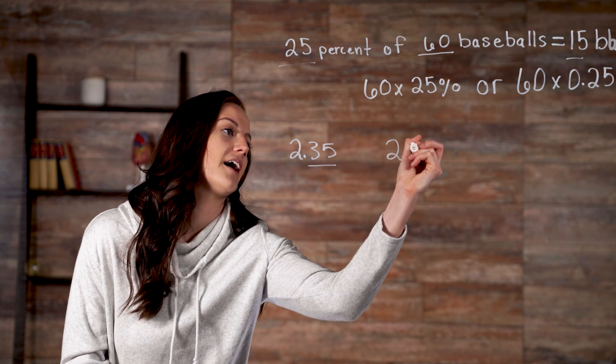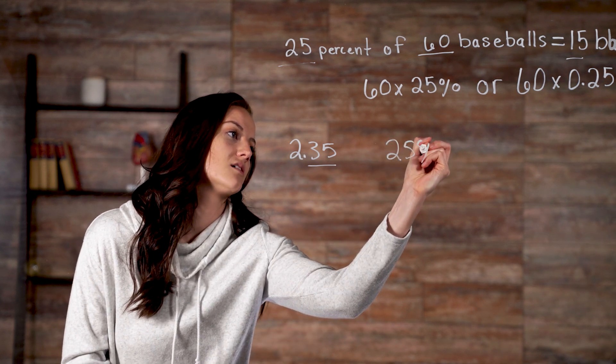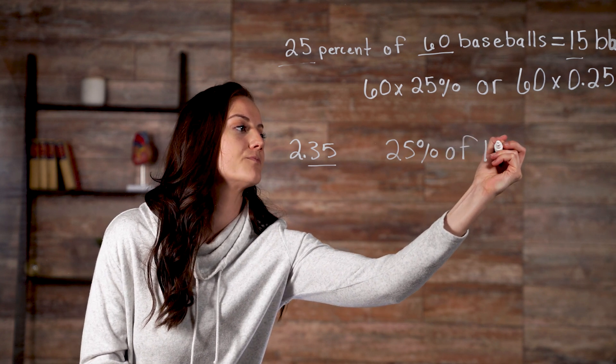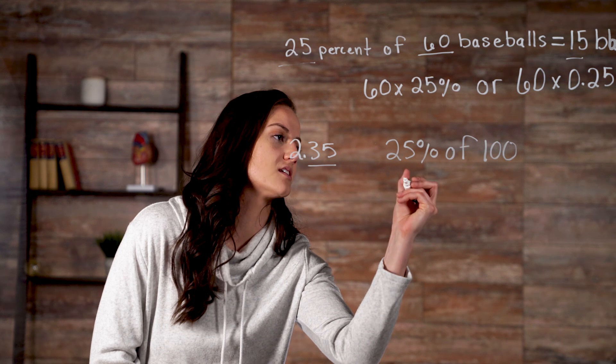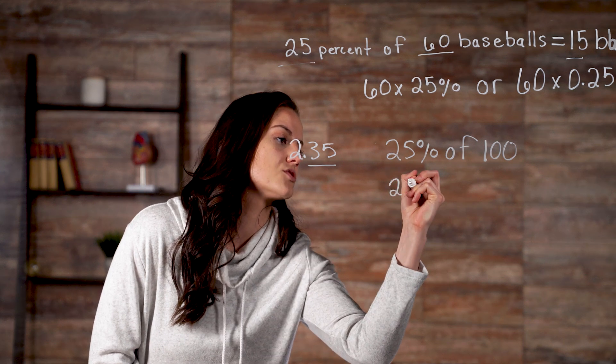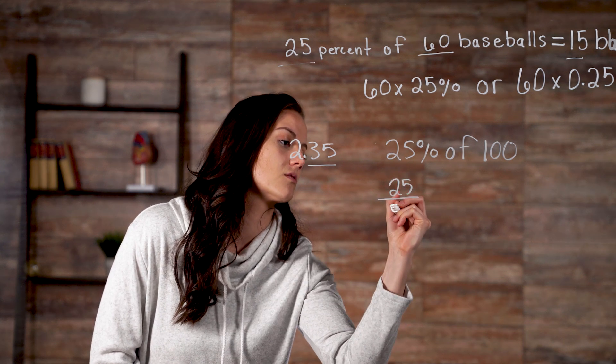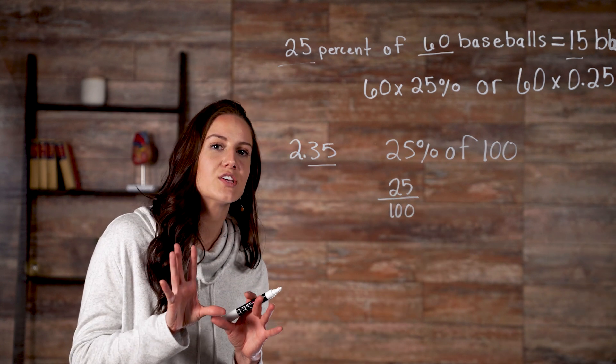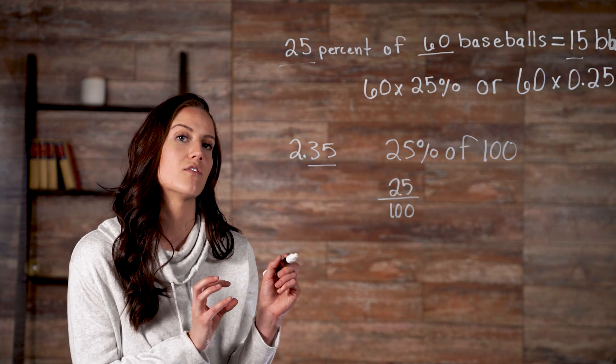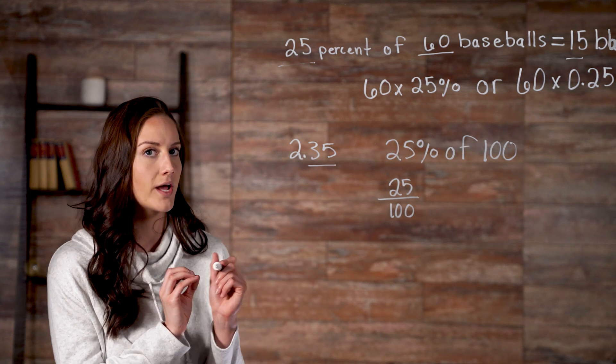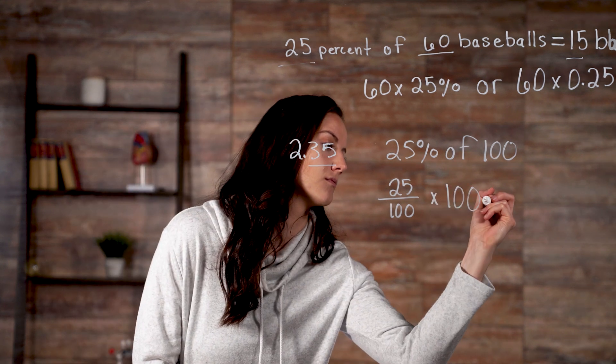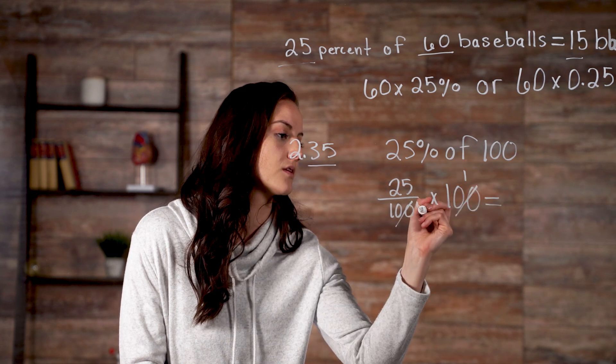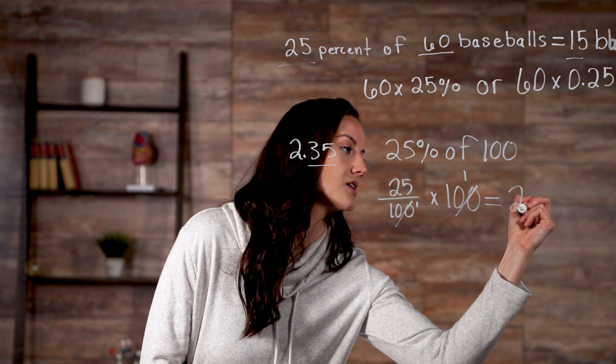Let's say that you want to calculate what 25% of 100 is. Well, 25% is equal to 25 over 100. So then to calculate the percentage, we would multiply 25 over 100 times 100. These cancel out, our 100s cancel out to give us 1. So then we have 25 over 1, which is 25.